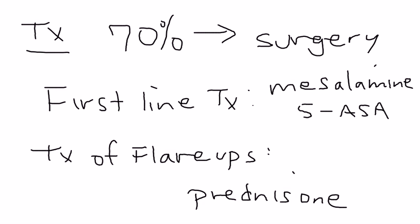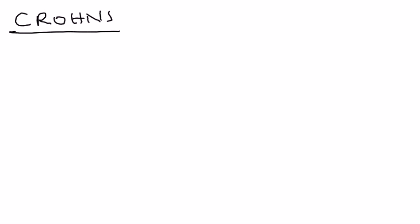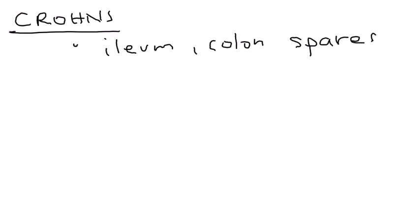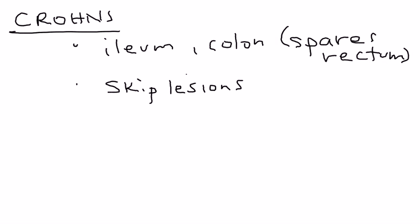Before getting into clinical vignettes, here are key exam points about Crohn's disease. First, it can happen anywhere — in the ileum or the colon — unlike ulcerative colitis; it usually spares the rectum. Second, there are skip lesions — intermittent areas of bowel that are affected, separated by normal areas, also called skip areas.